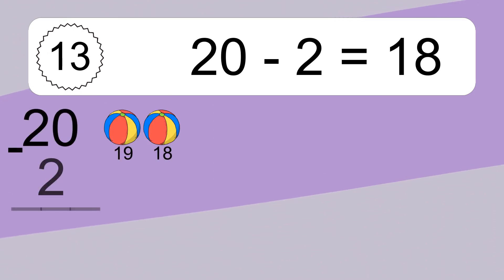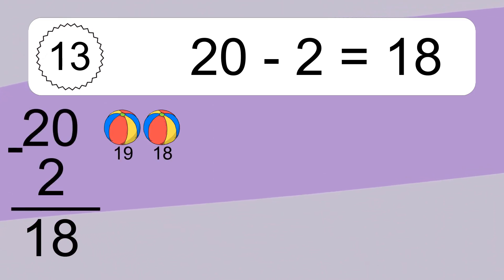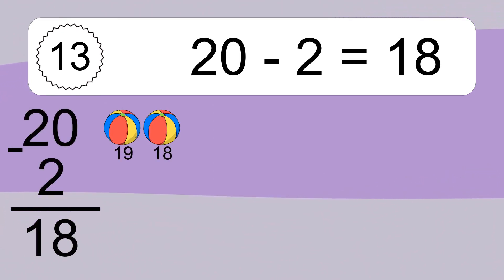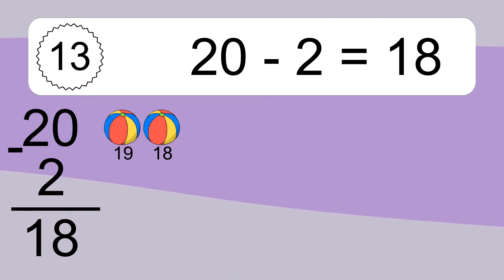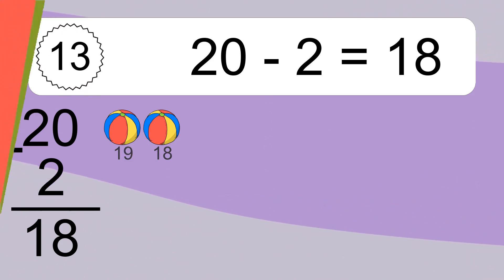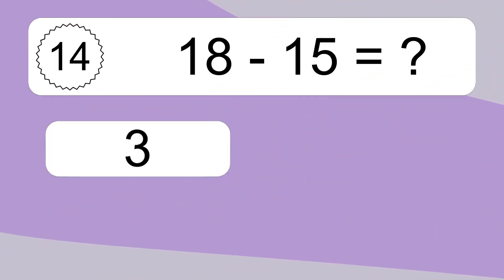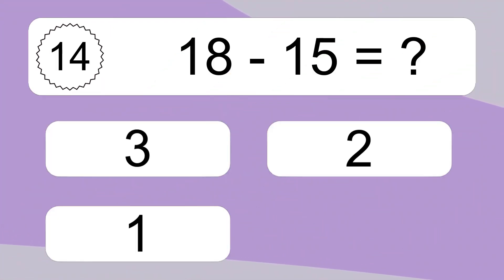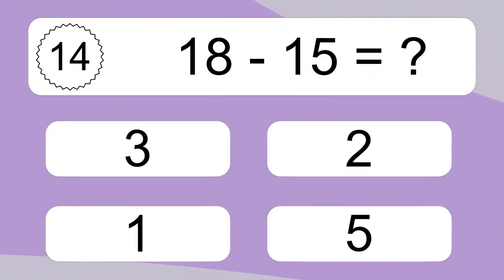20 minus 2 equals what? 20 minus 2 equals 18. Let's count it. 19, 18.